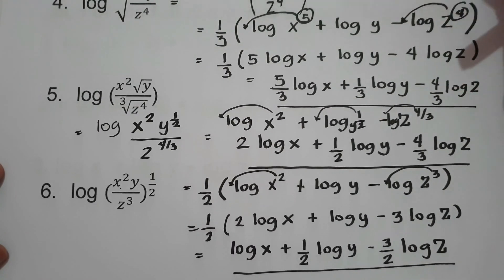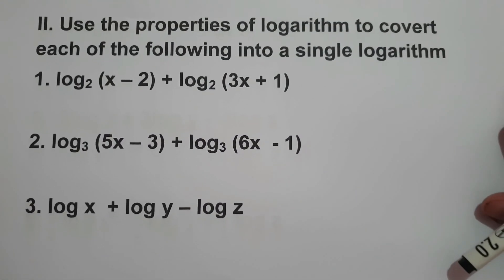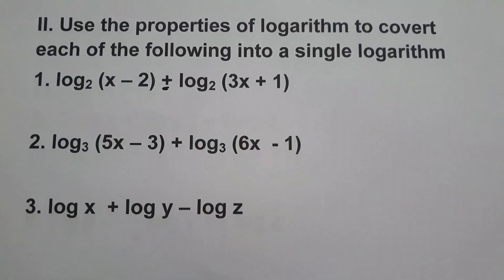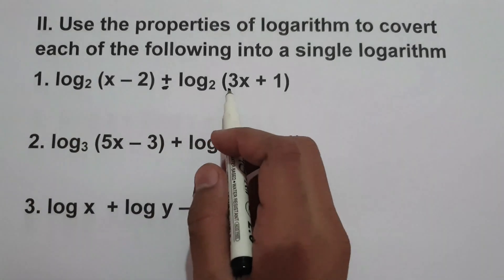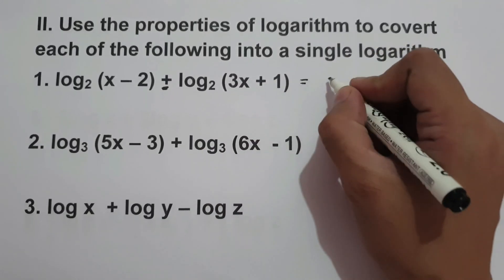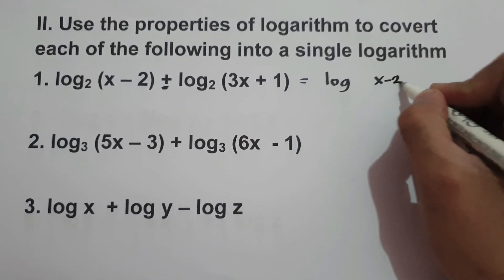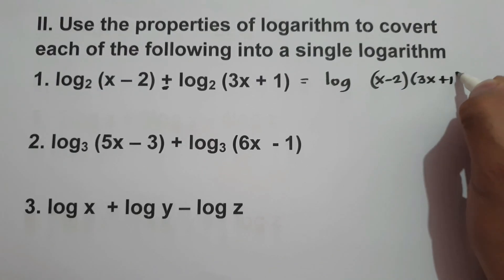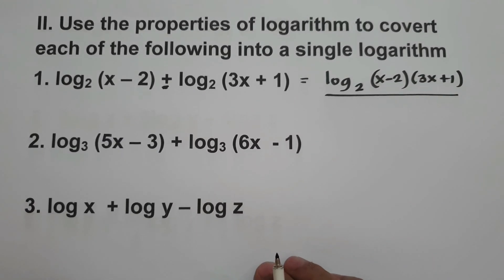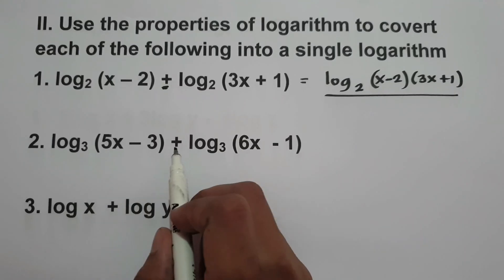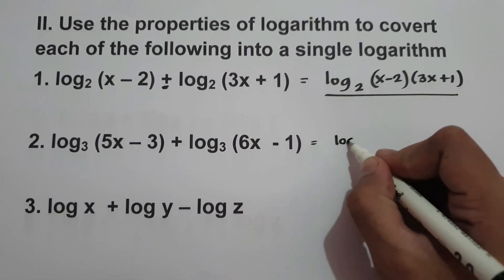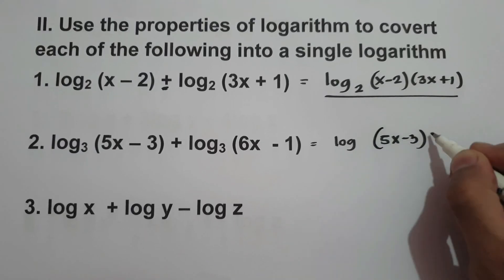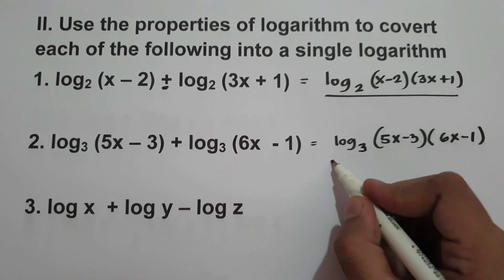Now we are going to use the different properties of logarithms to convert each of the following into a single logarithm. The addition operation gives us the idea that this would be a product. Number one: log base 2 of (x−2) plus log base 2 of (3x+1) equals log base 2 of (x−2)(3x+1). Number two: log base 3 of (5x−3) plus log base 3 of (6x−1) equals log base 3 of (5x−3)(6x−1).